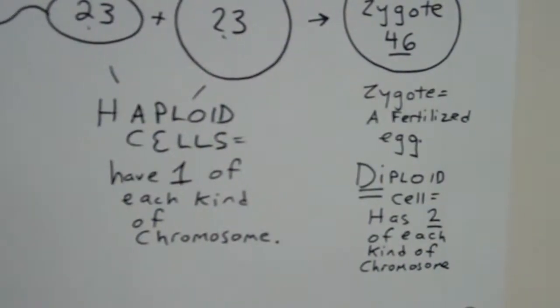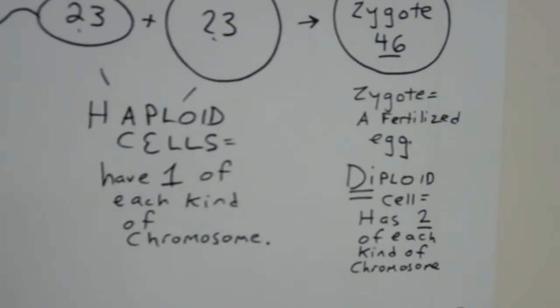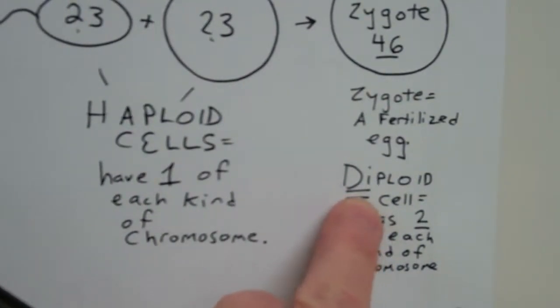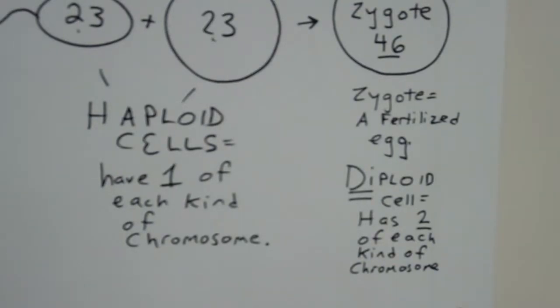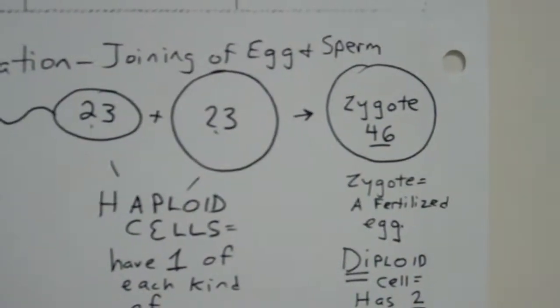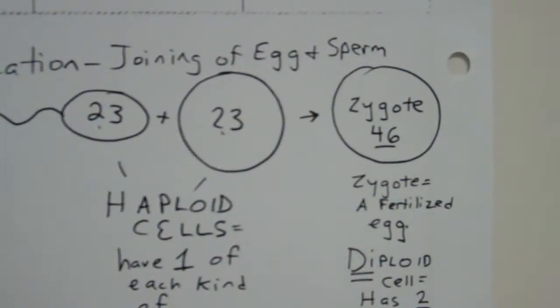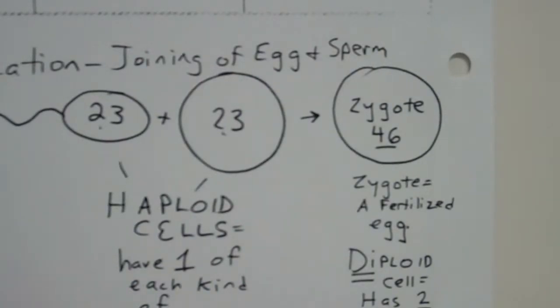So a diploid cell, you actually pronounce it diploid. I pronounced it diploid to emphasize the fact that di means two. So a diploid cell has two of each kind of chromosome. So now we know the difference between a diploid cell and a haploid cell. Those words will come in handy a little bit later in our studies. But I wanted to introduce them to you. You should know what fertilization means. And you should know what a zygote is. All right. So let's go now to the front.